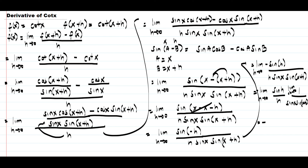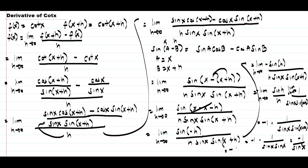Since we have a negative, we get negative 1 times 1 over sine x times sine of x plus 0, which is sine x. So we have negative 1 times 1 over sine squared x, which equals negative 1 over sine squared x. The reciprocal of 1 over sine is cosecant, so the final answer is negative cosecant squared x. This is the derivative of cotangent x. I hope you've learned from this video. Thank you so much for watching and God bless us all.